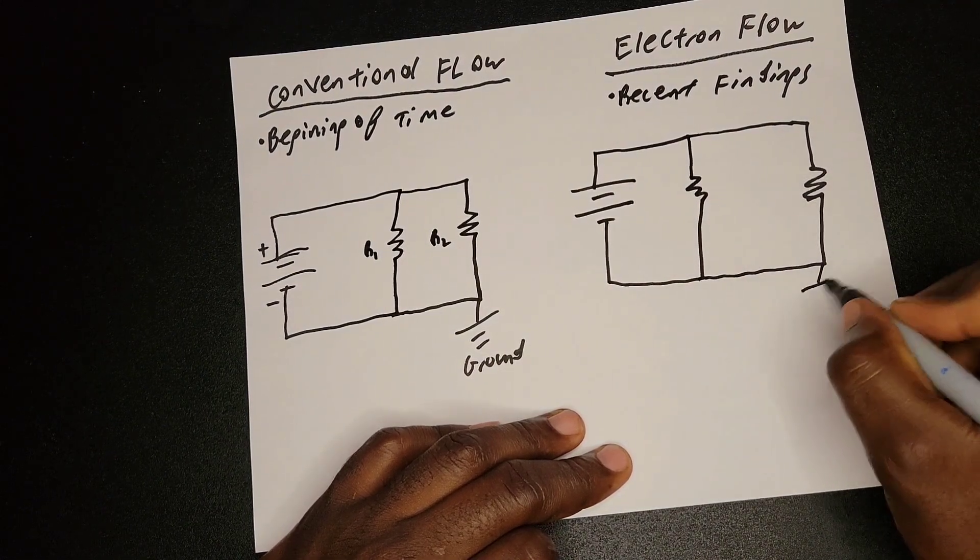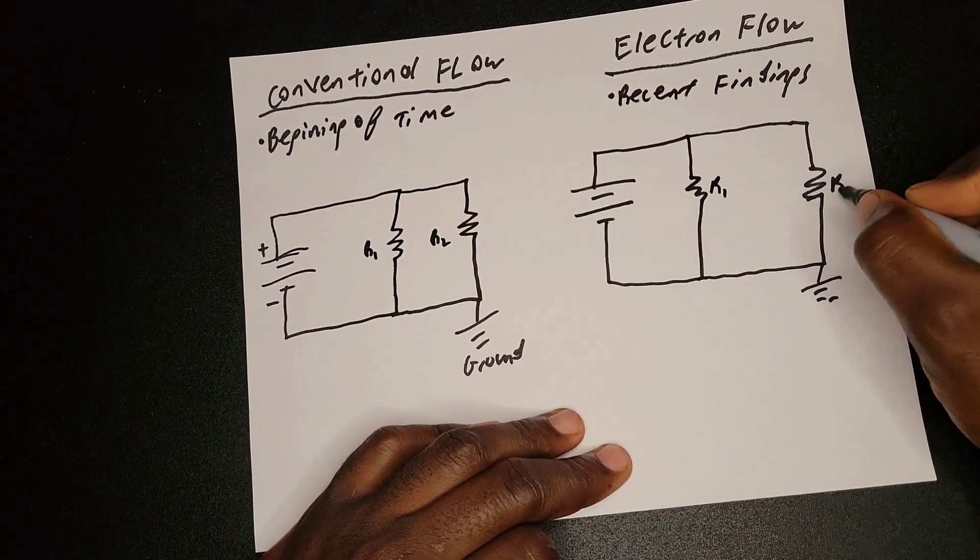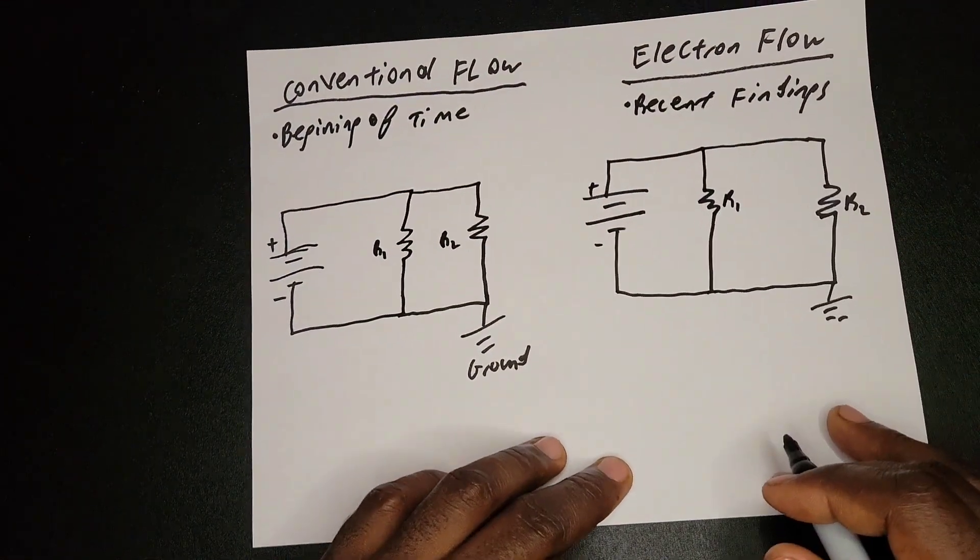And I have my ground. This is R1, this is R2. This is positive and that is negative.